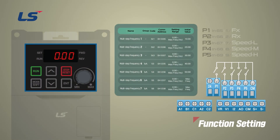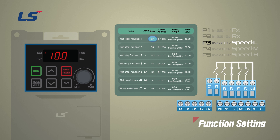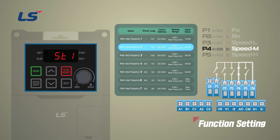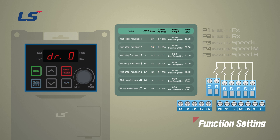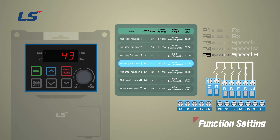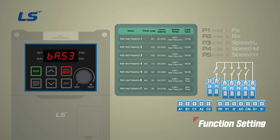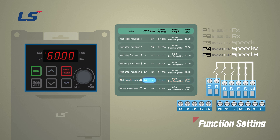The P3 terminal means first stage frequency, and the first stage frequency value is set in operation group ST1, multi-step frequency 1. The P4 terminal means second stage frequency, set in operation group ST2, multi-step frequency 2. If only the P5 terminal is input, it means the fourth frequency, set in B-A53, multi-step frequency 4. If P4 and P5 terminals come on at the same time, it means the sixth stage frequency, set in B-A55, multi-step frequency 6. By this combination, speed settings for each interval can be set up to B-A56, multi-speed frequency 7.